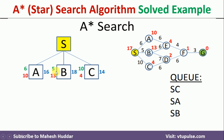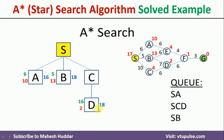Among these three, C has the least cost, so we explore C first. From C, we can only reach D. The cost for this path is 10 (S to C) + 6 (C to D) = 16, plus the heuristic value of D which is 2, giving a total of 18. We add D to the queue. Now among the three possibilities, S→A at 16 is the minimum, followed by S→C→D at 18 and S→B at 18.